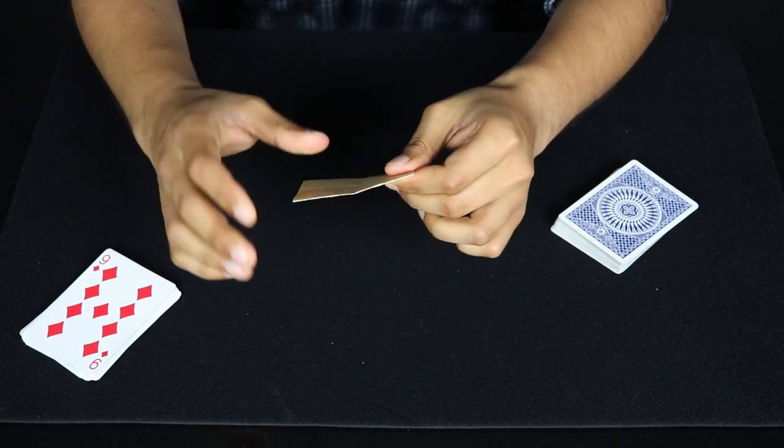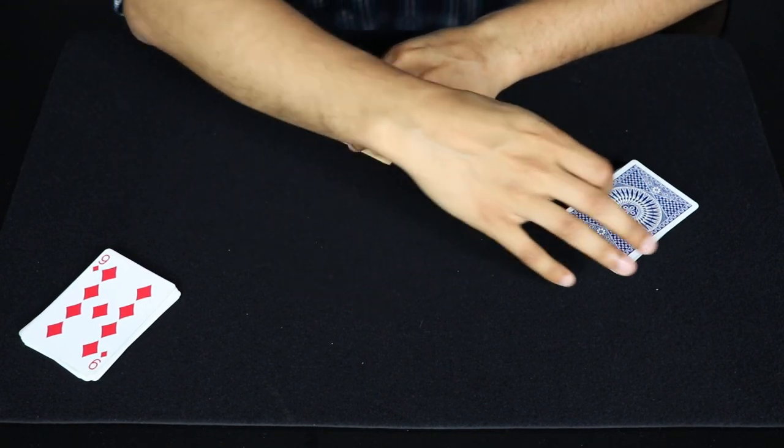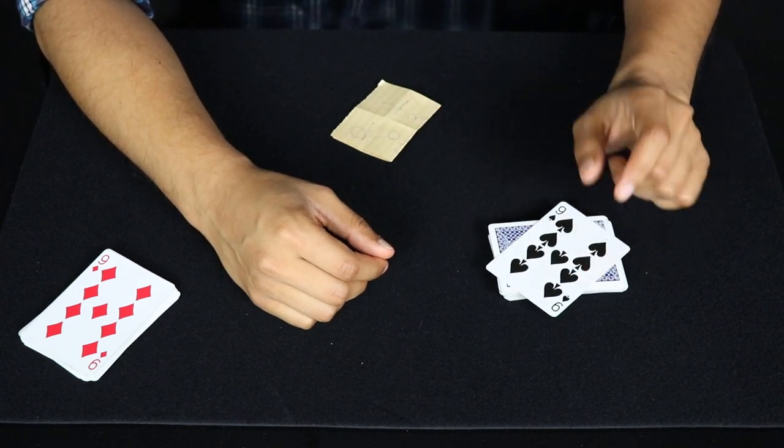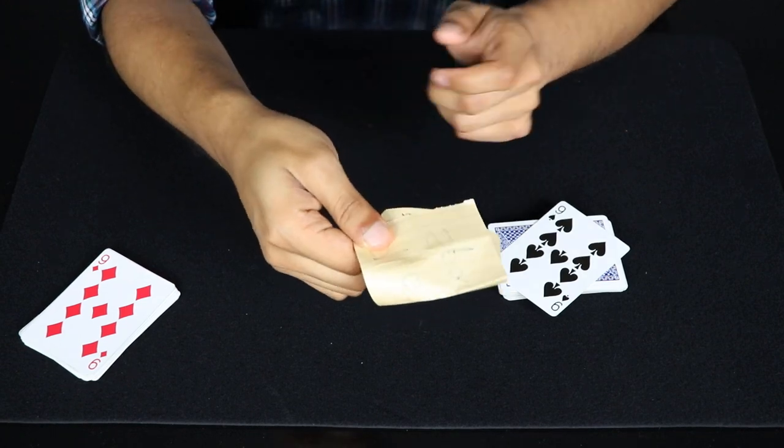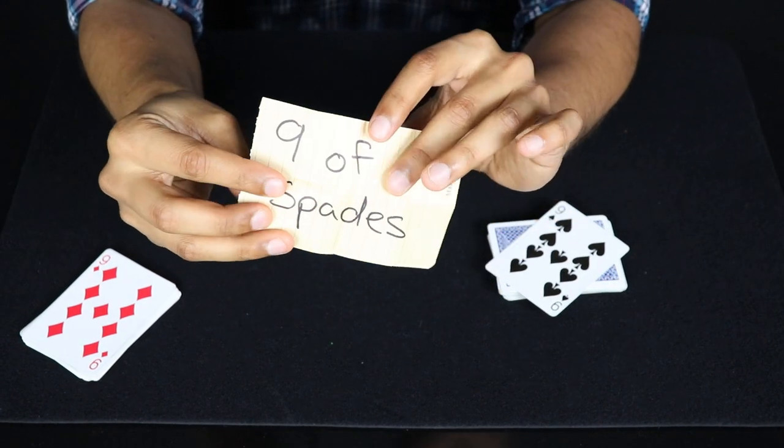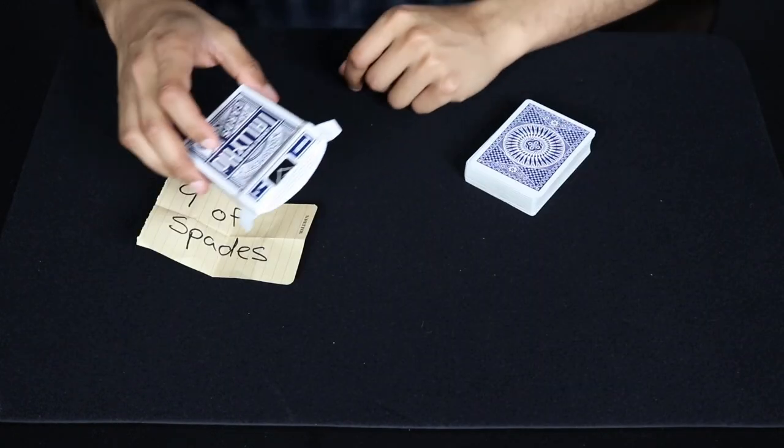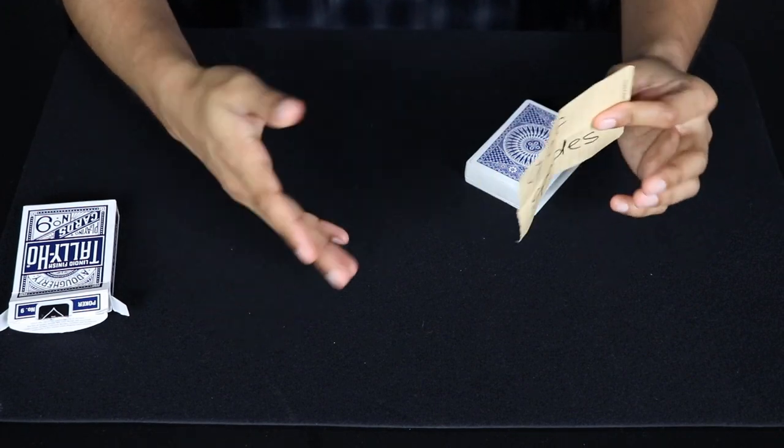And on this prediction card I have here, let me actually reveal this first that would probably be better. We can see we have the nine of spades. And if we take a look at this piece of paper on the prediction I wrote the nine of spades. All right, so just picked up my box back again. And yeah, let's get into the explanation.